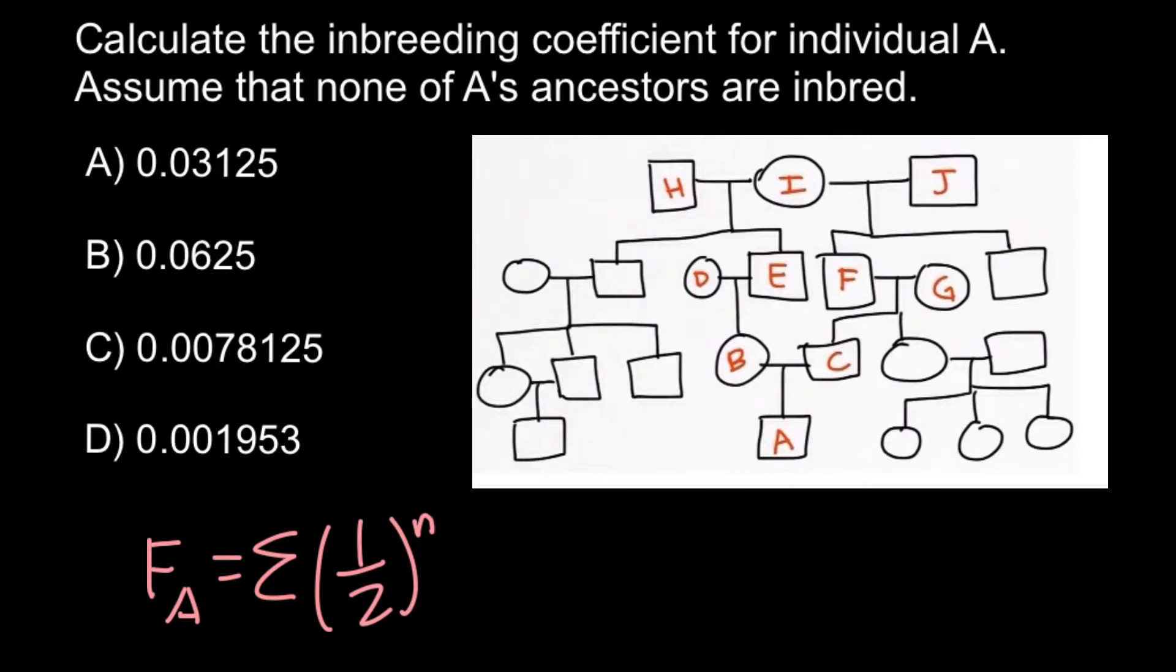And now if we would make direct connections from individual A to the common ancestor of his parents, we would find the number of nodes. And this is going to be the first one, second, third, fourth, and fifth.